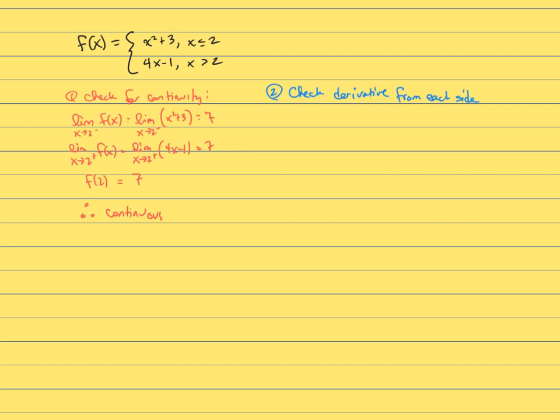Now if you remember, we talked about checking for continuity first, and you do that by taking the limit from the left and the limit from the right and the function value at the point. If those are all equal, then the function is continuous. If it wasn't continuous, you would stop. There would be no tangent line at that point. If it is continuous, however, we can proceed to step two.